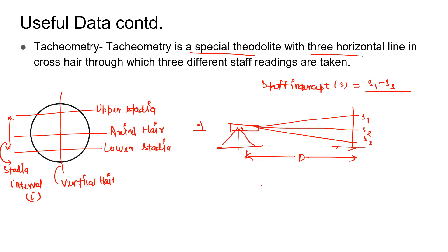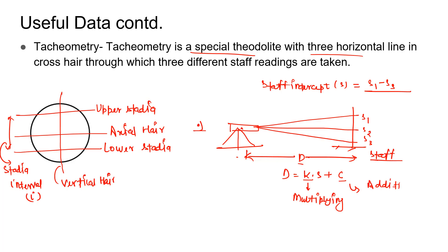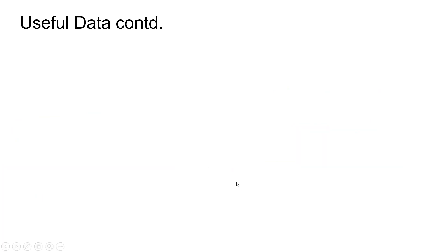The basic principle of tacheometry is to find distance D using the formula: D = K × S + C, where K is the multiplying constant and C is the additive constant. As the observer moves closer to the staff, the staff intercept decreases — meaning if D is decreasing, the staff intercept will also decrease in the same manner.